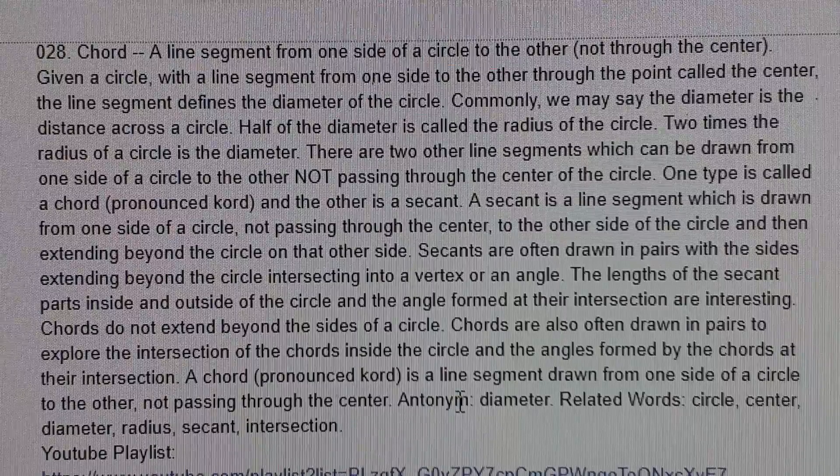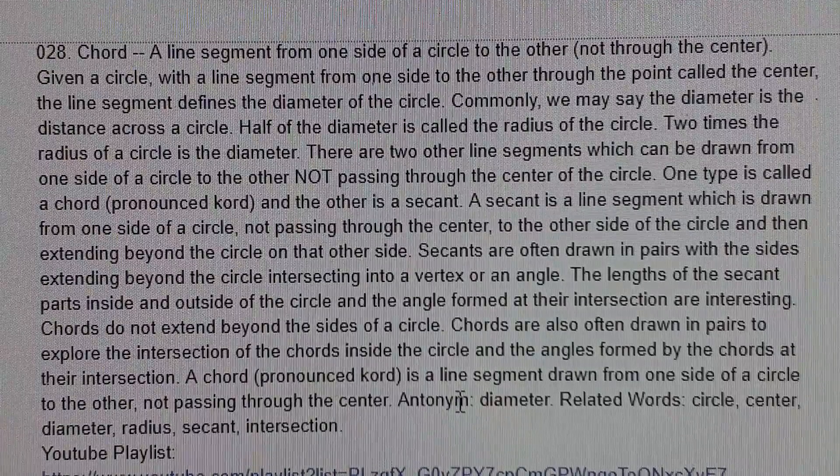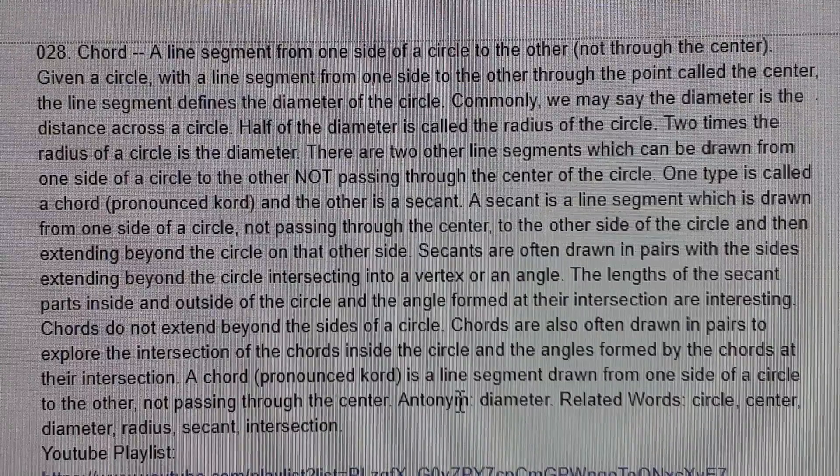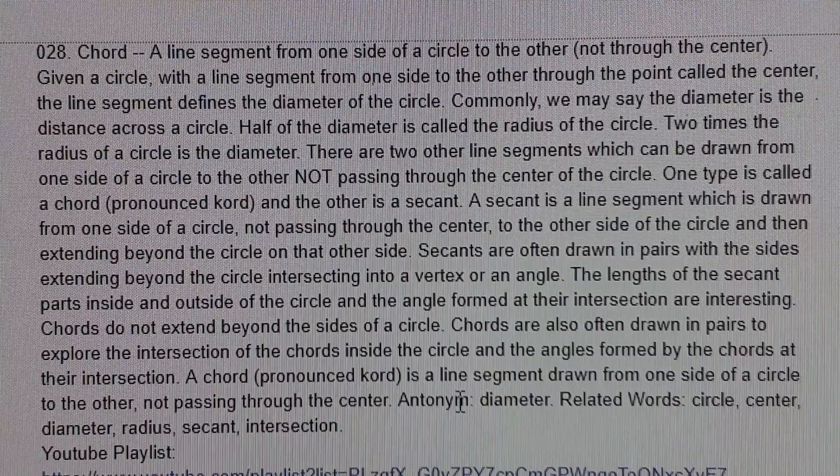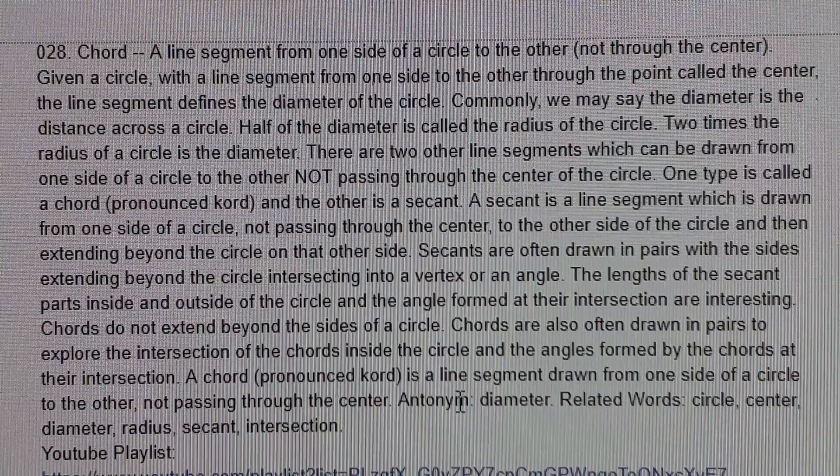And the other is a secant. A secant is a line segment which is drawn from one side of a circle, not passing through the center, to the other side of the circle, and then extending beyond the circle on that other side.